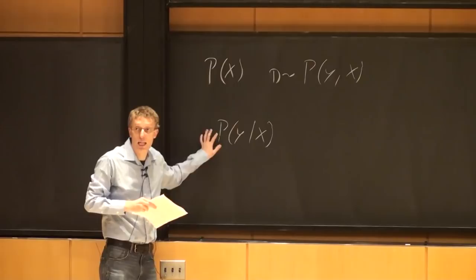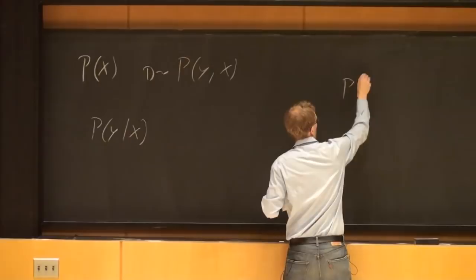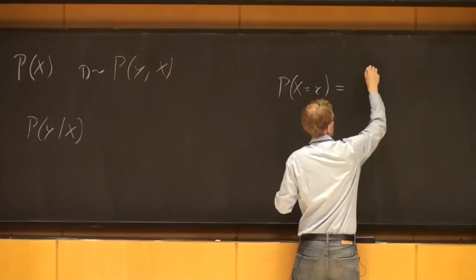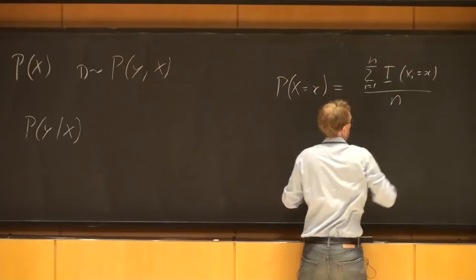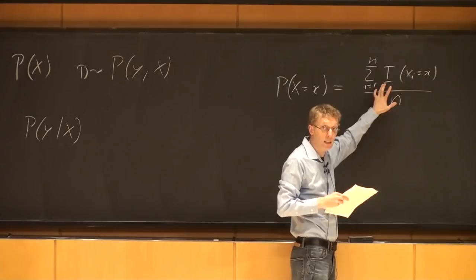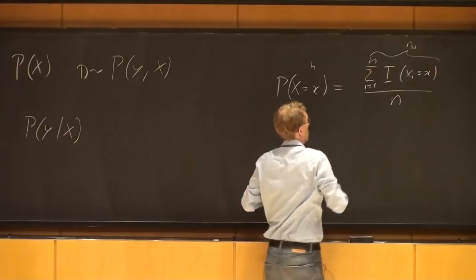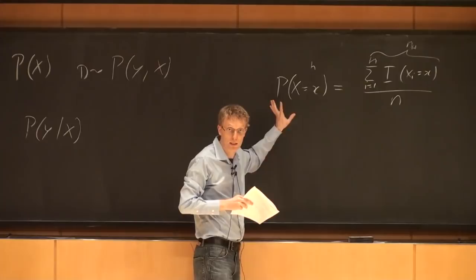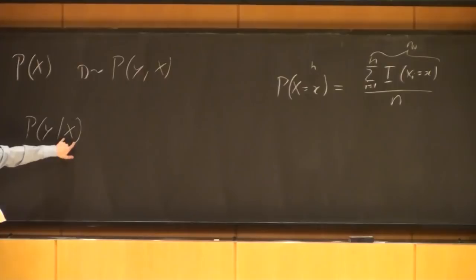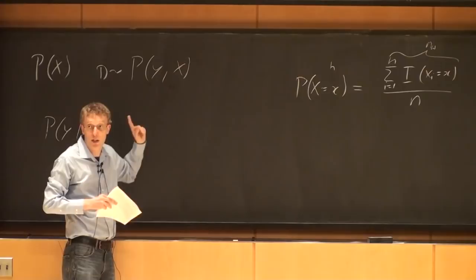As a reminder, for P(x), the MLE answer was: P(x = little_x) equals the sum over all data points of the indicator that x_i equals x, divided by n. So we count how many times we find x in our dataset divided by the total — that ratio is the probability we see x. Now I'd like you to figure out P(y|x) in the setting where you have a joint distribution of two variables, label y and a single feature x. Please discuss with your neighbor.